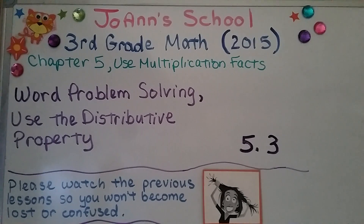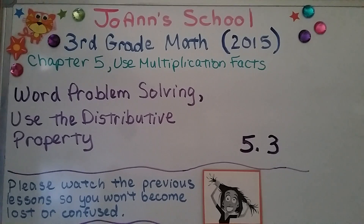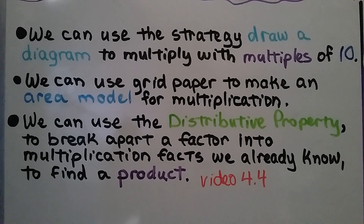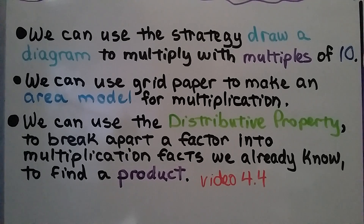Lesson 5.3: Word Problem Solving using the distributive property. If you haven't seen the previous videos you might become lost or confused — there's a link in this video's description so you can go to the playlist and watch them. We can use the strategy of drawing a diagram to multiply with multiples of 10, use grid paper to make an area model, and use the distributive property to break apart a factor into multiplication facts we already know. That was covered in lesson 4.4, linked in the description.